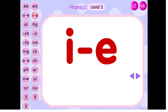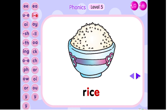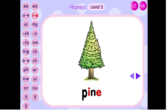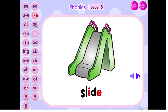The sound of ee is ee. R, ice, rice. K, kite. P, pine. Sl, eid, slide.